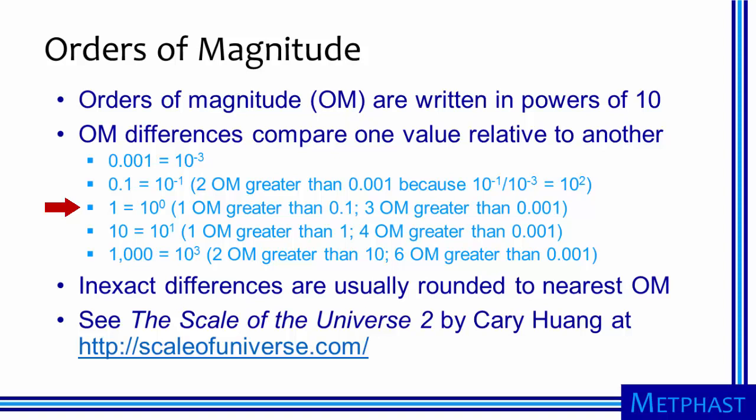10 to the zero power divided by 10 to the minus first power is equal to 10 to the first power, and 1 is three orders of magnitude greater than 0.001. In turn, 10 is equal to 10 to the first power, so it's one order of magnitude greater than 1 and four orders of magnitude greater than 0.001.